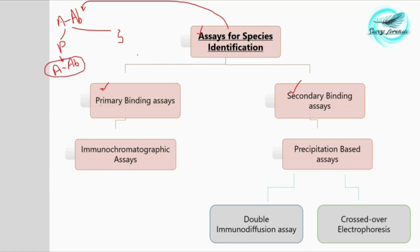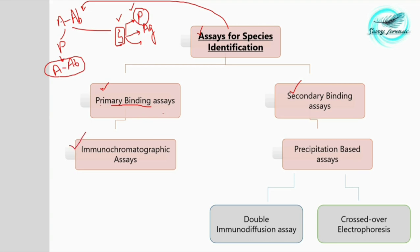In the secondary reaction, the antigen-antibody reaction takes place in the form of precipitation when the antigen is present on the cell surface. When a soluble antigen is present, agglutination-based assays are used, and third is complement fixation. For species identification, we usually perform precipitation-based assays, which are a type of secondary binding. In the primary binding assays, we use immunochromatographic assays as well as ELISA.